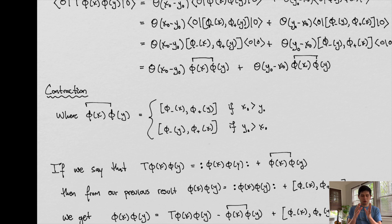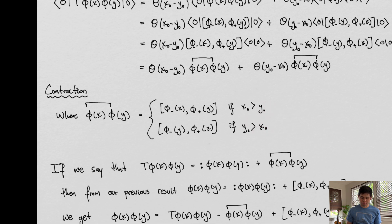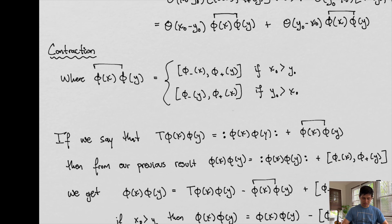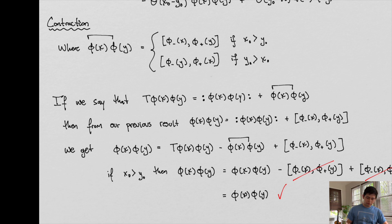We use one propagator over the other depending on the time component of each one. If the time component of one is greater than the time component of the other we use that form, whereas if the time component of the other is greater then we use the other form. So we're putting two propagators into one definition and choosing which propagator to use based on which time component is greater.